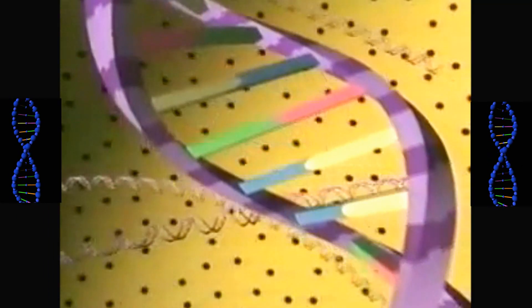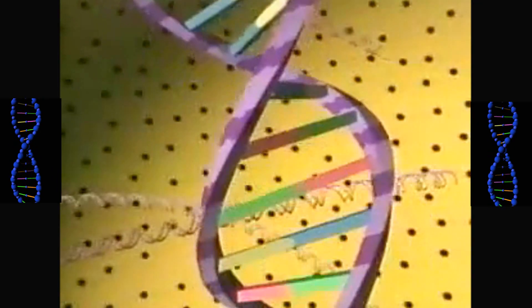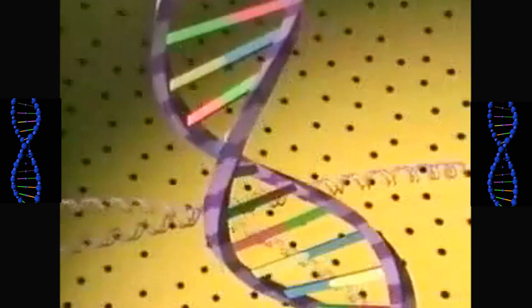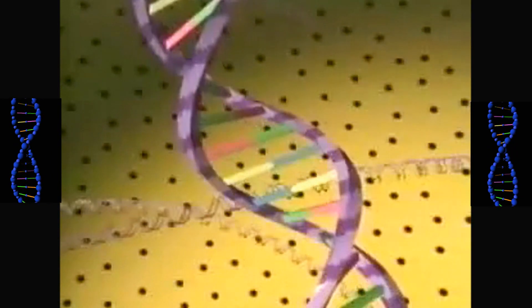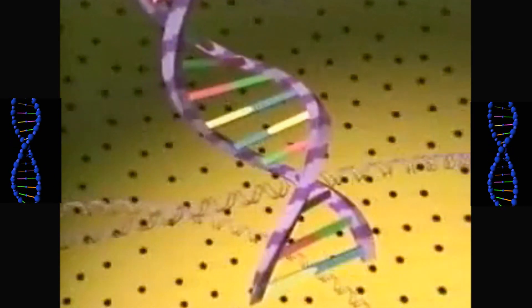The sugar phosphate bonds form the double backbone of the molecule, the handrails of the staircase. But we find the genetic key to DNA in the steps of this stairway, the nitrogen containing bases.